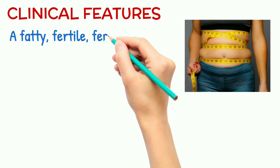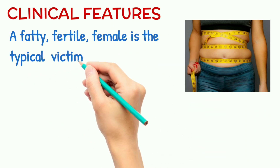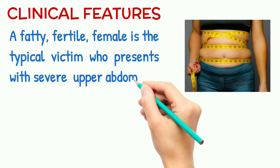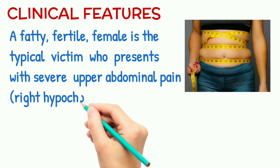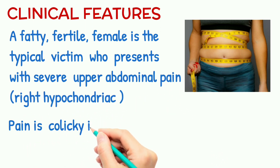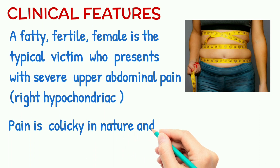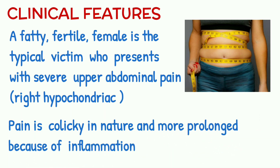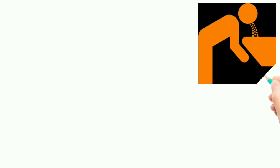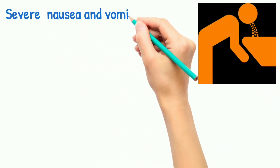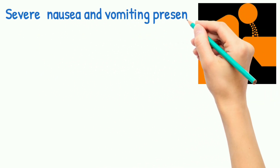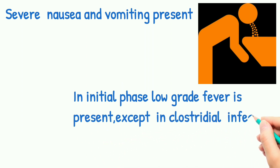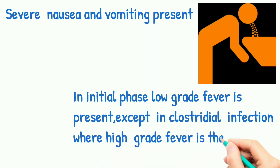The clinical features: the typical victim is a fatty, fertile female who presents with severe upper abdominal pain, specifically right hypochondriac pain. The pain is colicky in nature and more prolonged due to inflammation. There is severe nausea and vomiting in the initial phase, and a low-grade fever is present.